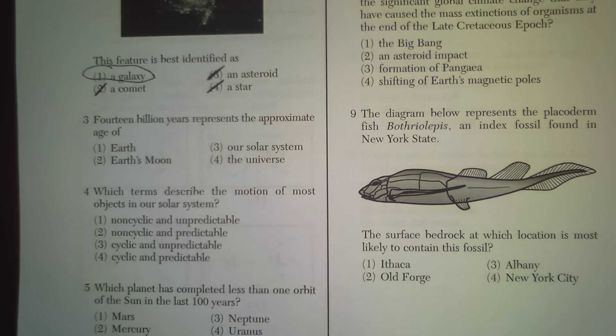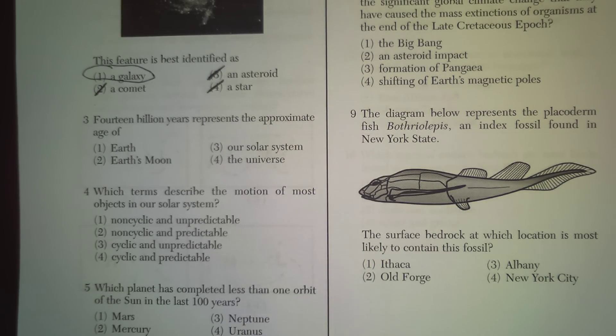Question 3: 14 billion years represents the approximate age of what? The Earth, Earth's moon, our solar system, or the universe?